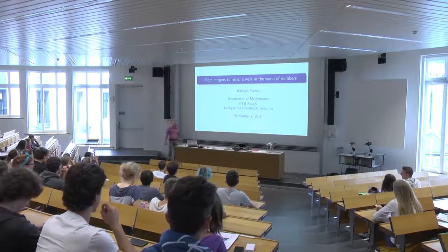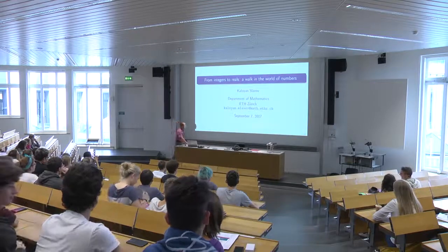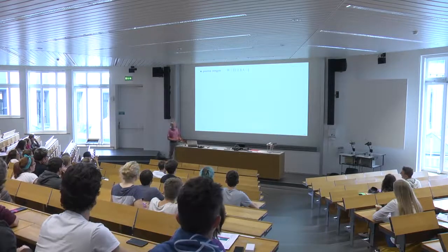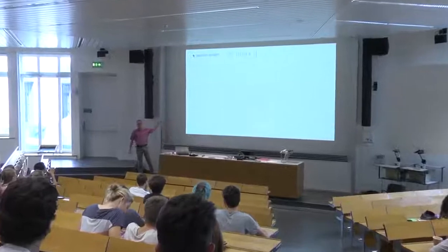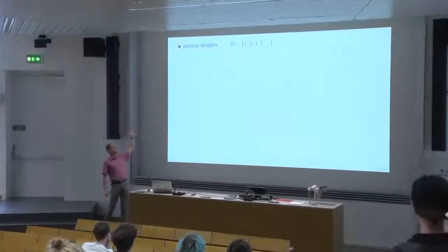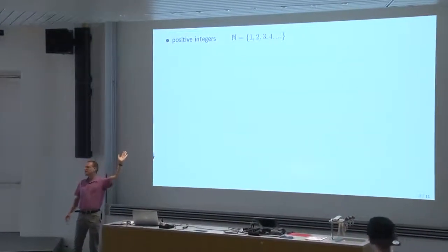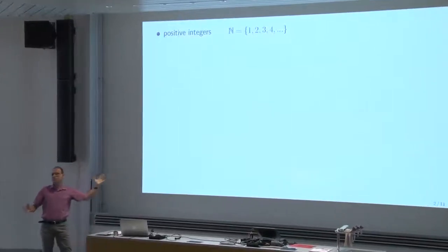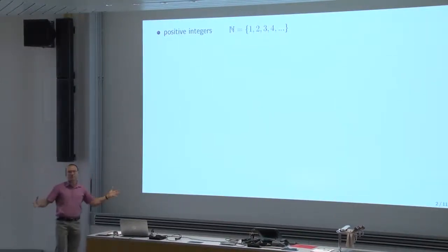Welcome, everyone. We begin by recalling that the set of positive integers is denoted by capital N and consists of the numbers 1, 2, 3, 4, 5, and so on. Sometimes people call it natural numbers. These are the numbers that you use for counting.